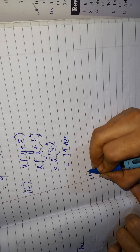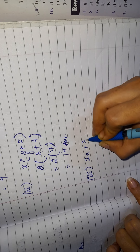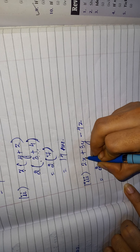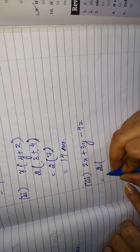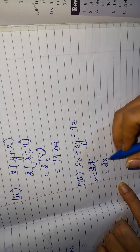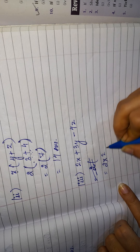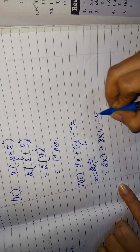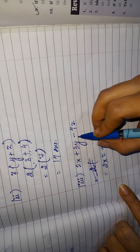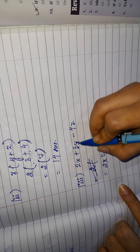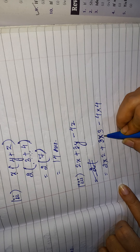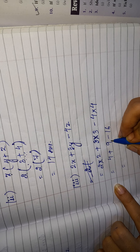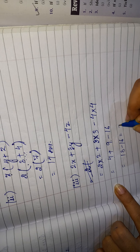Third: 2x plus 3y minus 4z. Instead of x write 2 — x is being multiplied so we write 2 times 2. Instead of y write 3 — 3 times 3. Instead of z write 4 — 4 times 4. So: 4 plus 9 minus 16. That is 13 minus 16, which equals minus 3. Minus 3 is the answer.